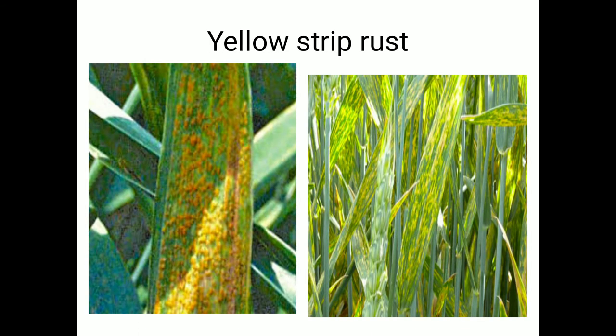The second rust is yellow strip rust. The fungus Puccinia recondita mostly attacks the leaves, leaf sheath, stalk, and ears. In yellow strip rust, uredospores are small and oval and do not run together through the epidermis. The uredospores of yellow strip rust are lemon-shaped or yellowish in color and are observed on the leaves.